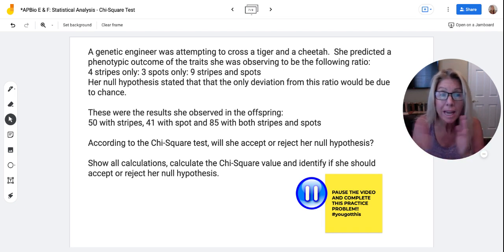Now, first of all, what is that four like as a ratio? So that doesn't mean she expected only four with stripes. This was her ratio. So there's a total of four plus three plus nine. That's 16.